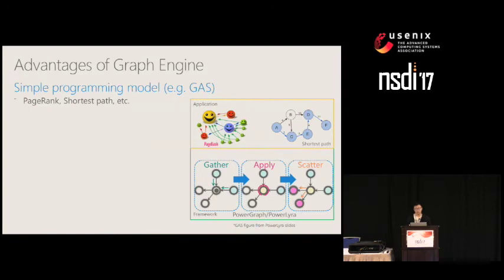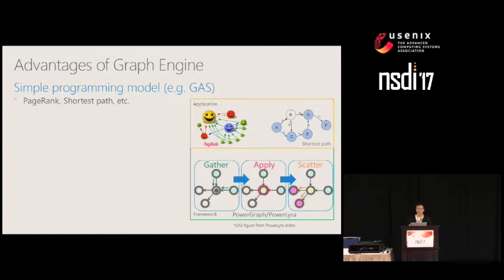To address machine learning problems with graph structure, a distributed graph engine could be a good choice. Graph engines typically adopt a simple programming model like GAS, where users only need to write gather, apply, and scatter functions. The system schedules these three phases in order and applies user-defined functions to all vertices, making it a good abstraction for graph applications like PageRank and shortest paths.